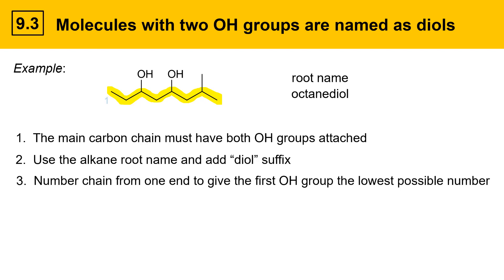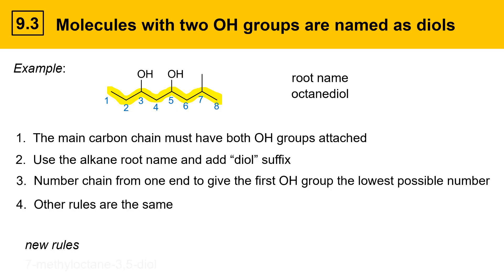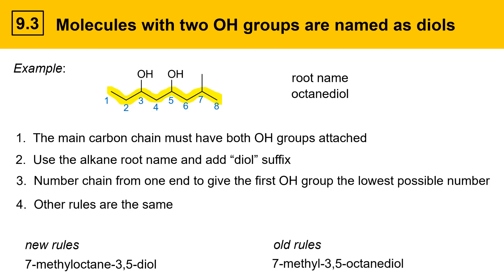Number the chain from one end to give the lowest possible number to the first OH group. In this molecule, starting from the left gives the OH groups the numbers three and five. Note there is a substituent that would be at position two from the other end, but preference is given to the OH groups. We also have a methyl group at position seven. Under the new rules this molecule is named 7-methyloctane-3,5-diol; under the older rules it would be 7-methyl-3,5-octanediol.